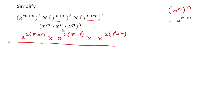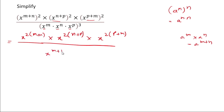In the denominator, the base is the same — x. We know that if the base is same, a to the power m multiplied by a to the power n equals a to the power (m+n). So here also the base is same and we write it as x to the power (m+n+p), whole to the power 3. Now we'll simplify.